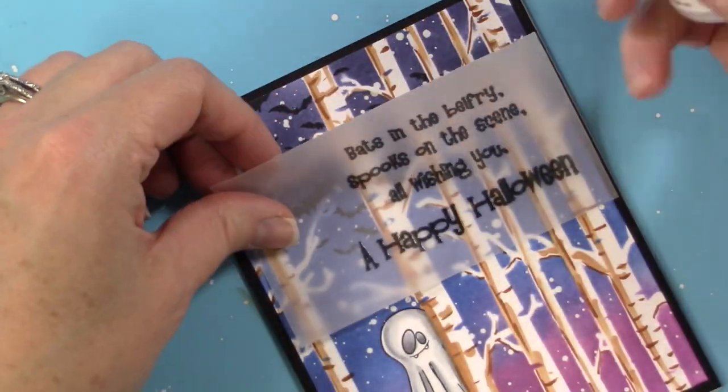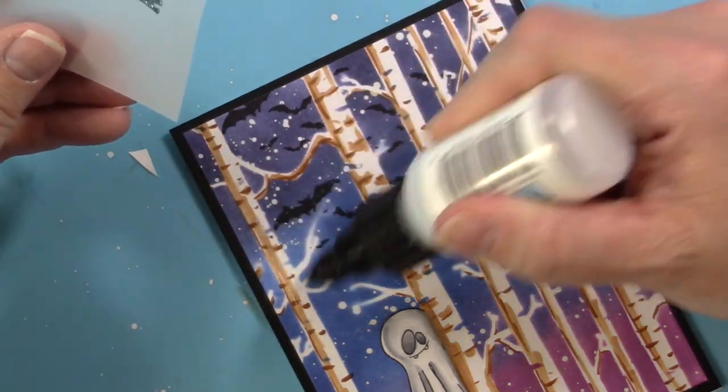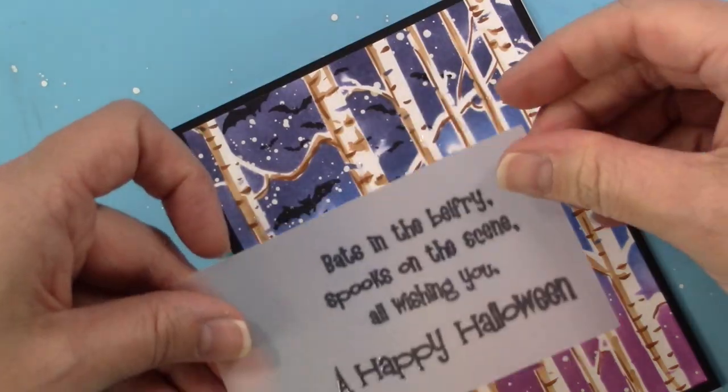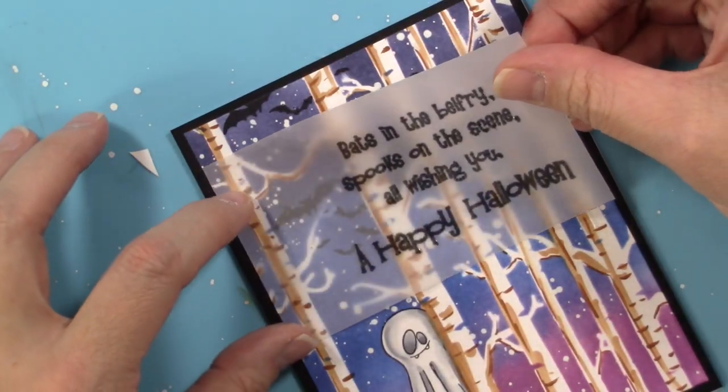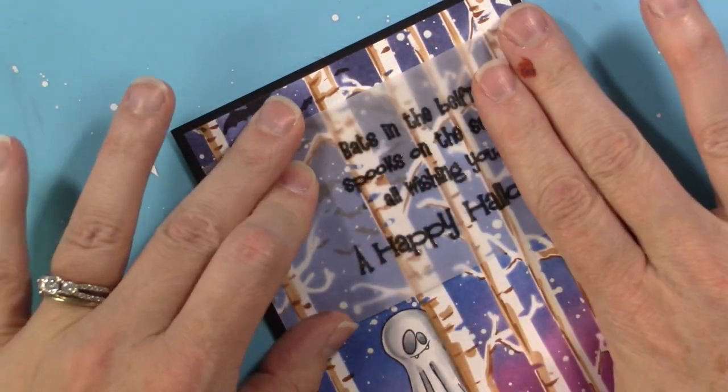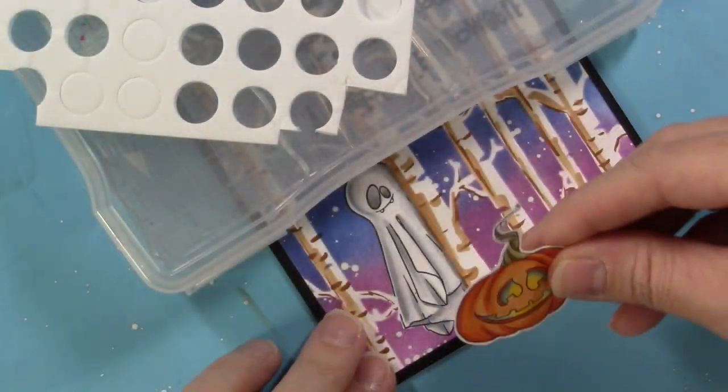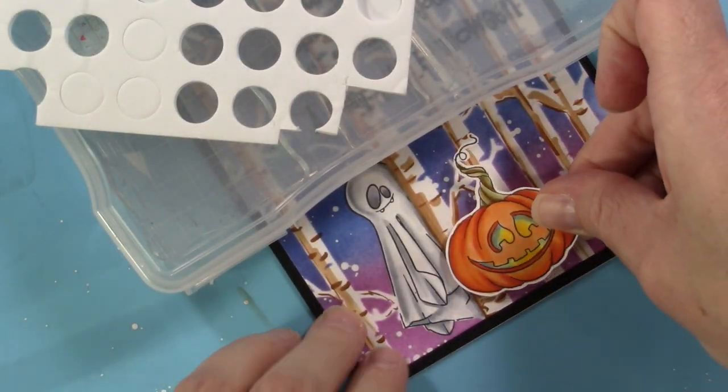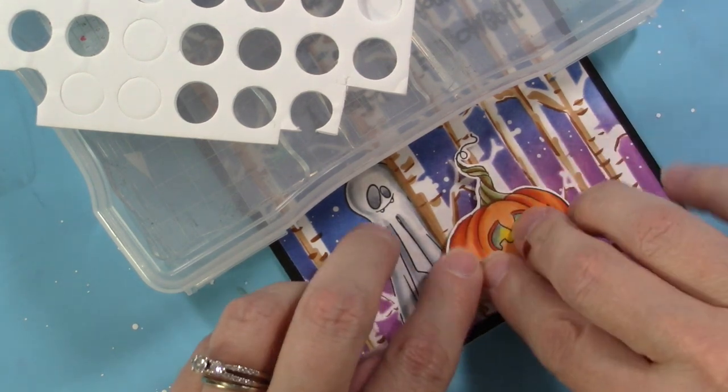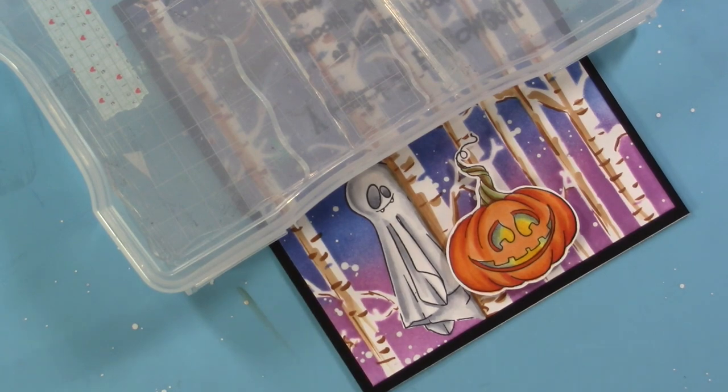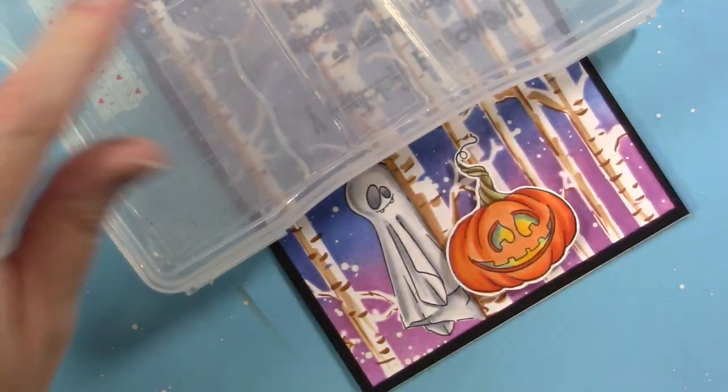Next I take my On Point glue and I'm going to glue down that vellum. I use the trees as a place to put my glue so that it doesn't show through the vellum and this works quite well. I push that down and add some weight on top of that vellum so it doesn't curl. I put some foam dots on my pumpkin to lift that pumpkin off of the background so that it pops out at you, and I have my finished card.